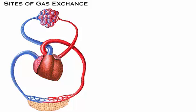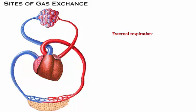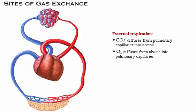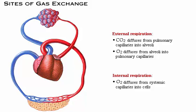Let's look at the sites of gas exchange in the body. Blood that is low in oxygen is pumped from the right side of the heart through the pulmonary arteries to the lungs. External respiration occurs within the lungs as carbon dioxide diffuses from the pulmonary capillaries into the alveoli and oxygen diffuses from the alveoli into the pulmonary capillaries. Oxygen-rich blood leaves the lungs and is transported through the pulmonary veins to the left side of the heart, then pumped through the systemic circuit to tissues throughout the body. Internal respiration occurs within tissues as oxygen diffuses from the systemic capillaries into the cells and carbon dioxide diffuses from the cells into the systemic capillaries.